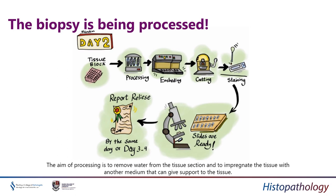After embedding, the tissue is cut on a microtome and then stained. The standard stain is H&E — hematoxylin and eosin — which is the gold standard of morphology. Depending on the specimen, you may have a full tray of slides or just a couple for a biopsy. After reviewing under the microscope, you request immunohistochemistry or special stains as needed, then release your final report — sometimes an interim report while awaiting further markers.